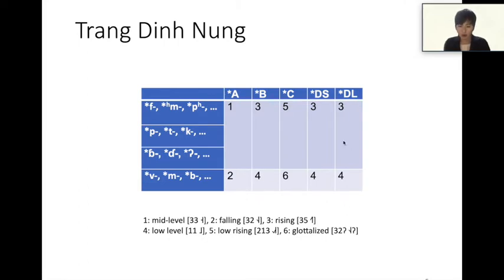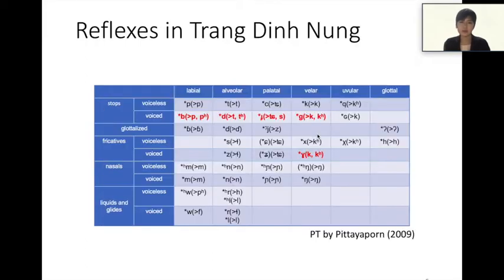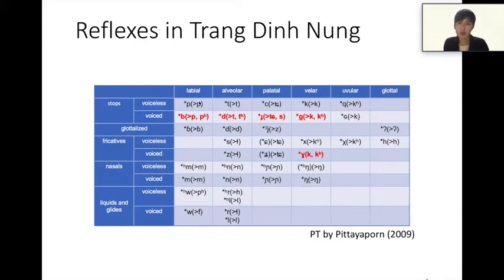Prototype *b does not split according to vowel length in Chanding NUN. Now let us see how prototype voiced consonants changed in Chanding NUN. This table shows the reflexes in Chanding NUN. One prototype voiced consonant corresponds to one consonant, such as prototype *b corresponds to ba in Chanding NUN. However, prototype *b, *d, *d, *g, *g, and *g have two reflexes.